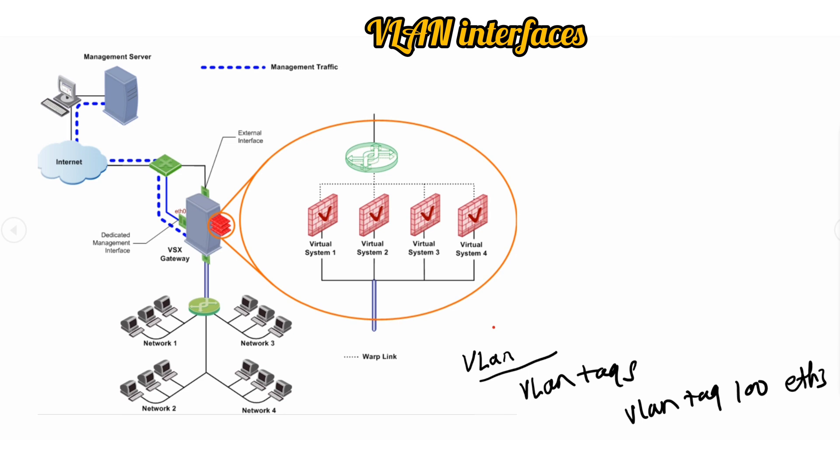What will happen? It will assign a virtual interface named, say, ETH3.100. So you will be getting a sub-interface like this, and the traffic using this VLAN tag will reach to the destination which is designated for this communication.